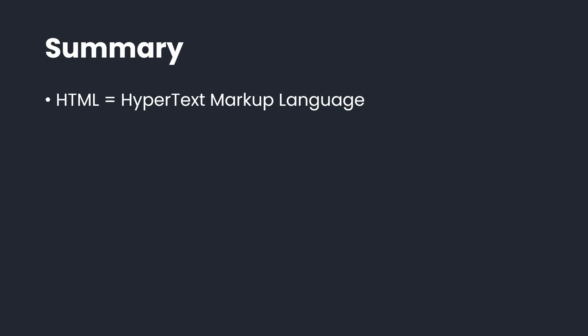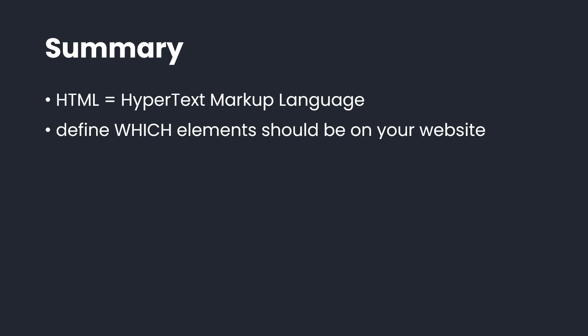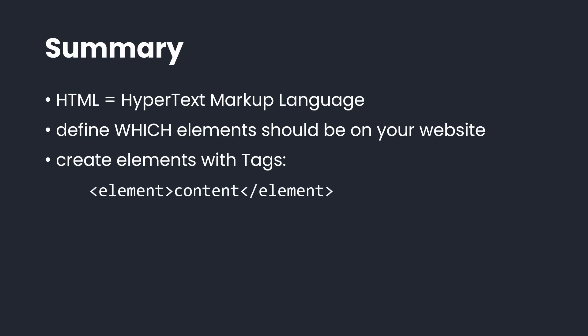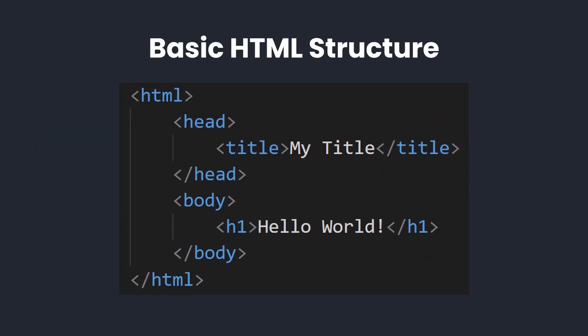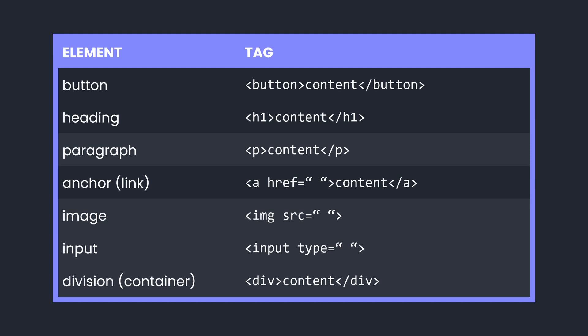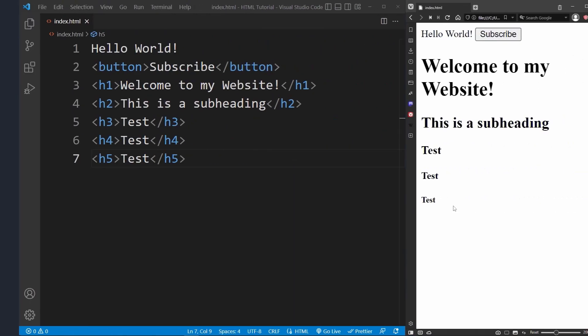HTML stands for HyperText Markup Language. It is used to structure the contents of a website — mainly about defining which elements should be on your website. To create HTML elements, you need to work with tags. Most elements consist of an opening tag, its content, and then a closing tag. However, there are elements that don't need any content or closing tag — the so-called self-closing tags. HTML elements can also be given attributes, which specify the element and are important for styling in CSS and for programming in JavaScript. Every website has a head and a body: all the settings are listed in the head and will not be displayed on the website, while everything inside the body will be displayed.